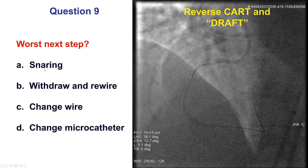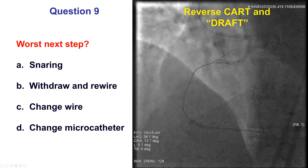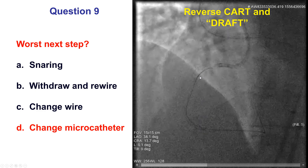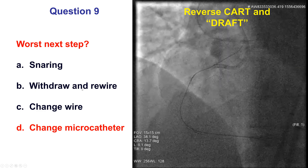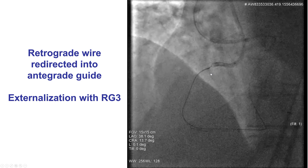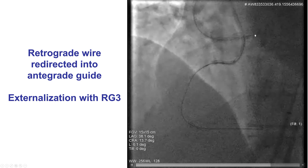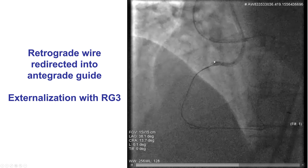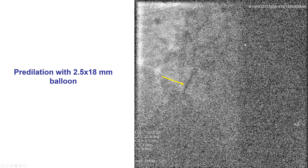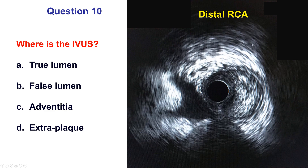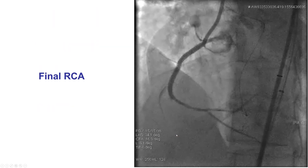In these cases, what would be the worst step? To snare, to withdraw and rewire, to change the wire, or to change the microcatheter? Obviously, you don't want to change the microcatheter because you have it in a very strong position, but everything else is an option. What we did here is just withdrew a few times and rewired, and eventually the wire found its way into the antegrade guide catheter. The wire was trapped, the retrograde Caravelle was advanced into the guide catheter, and then we externalized with RG3. We predilated and stented the right coronary artery with a long drug-eluting stent, providing a nice result.